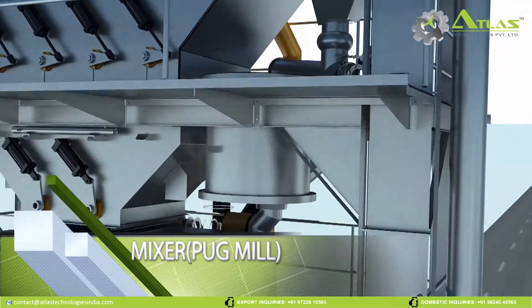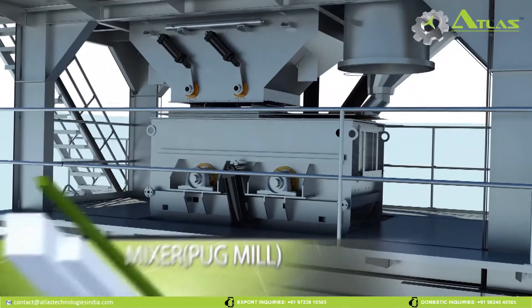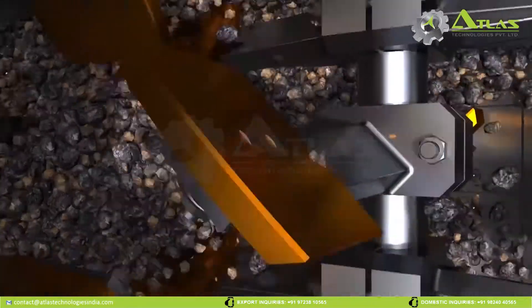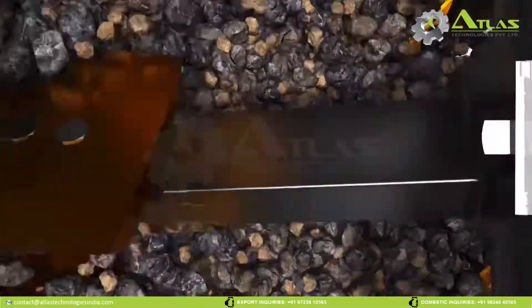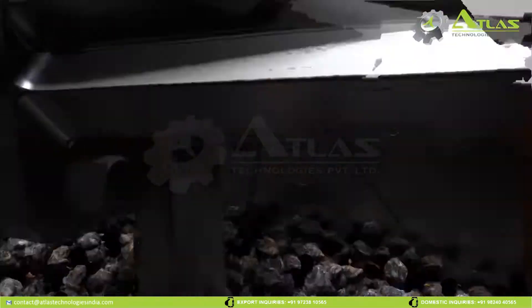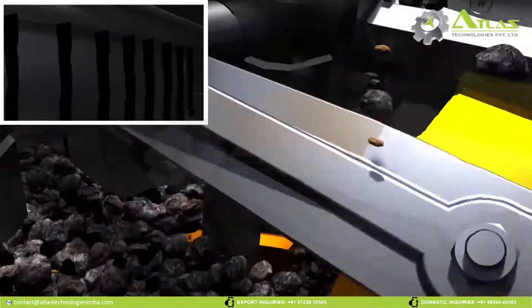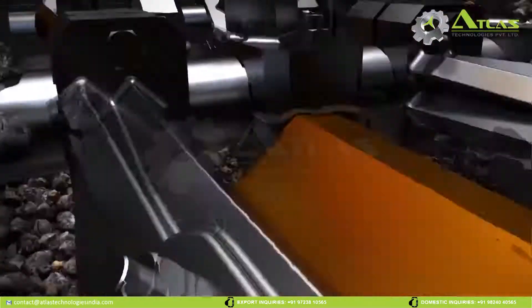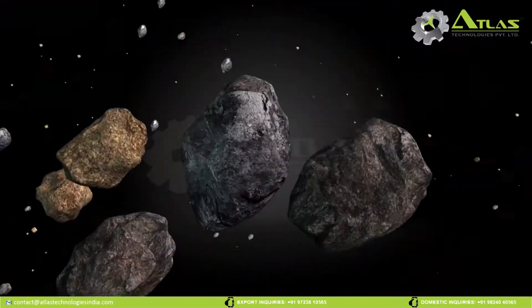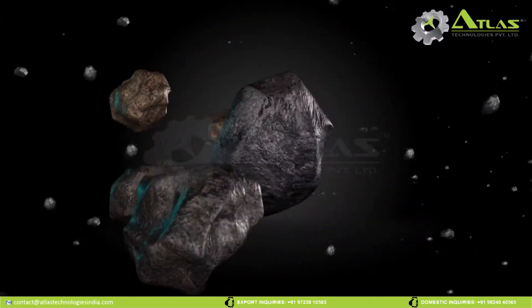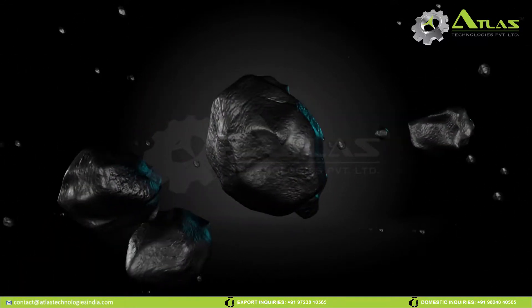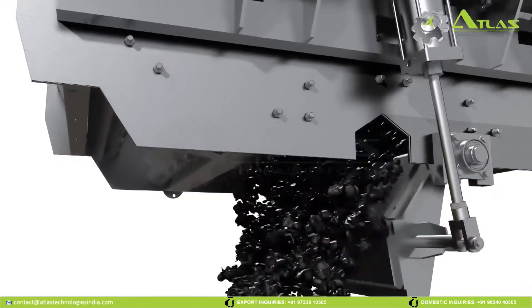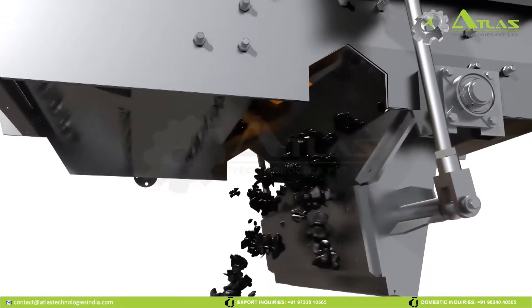Mixer. The special configuration of the agitating arms ensures thorough blending, giving a homogenous mixture within the shortest possible time. The powerful mixing forces ensure that the minerals' free surfaces are rapidly and evenly encased in a layer of bitumen. The asphalt mixture is now ready to load and it is emptied completely via the mixer door.